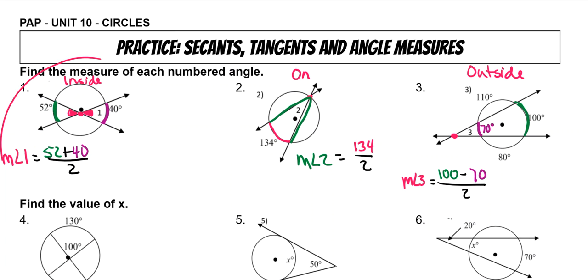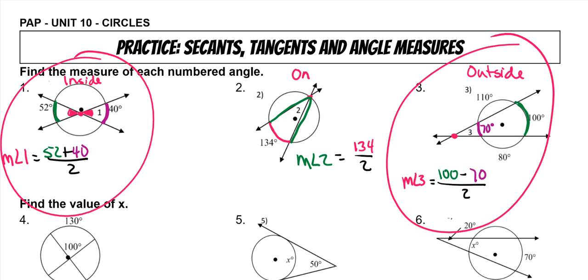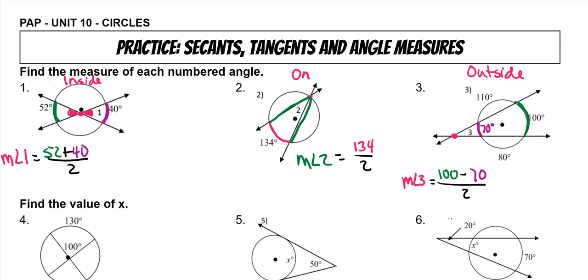So these are really the two new ones, and the only thing that you really have to remember is: if the intersection is on the inside, you add them; if the intersection is on the outside, you subtract them; and then of course, this situation where it's on the circle, and you just divide by two.